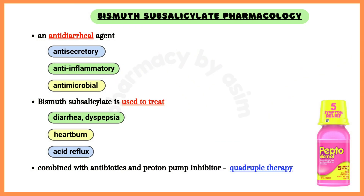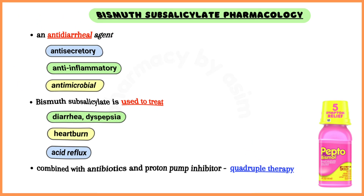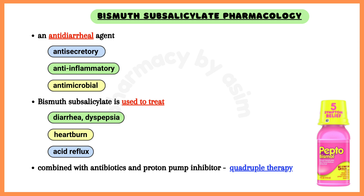Bismuth subsalicylate is an anti-diarrheal with anti-secretory, anti-inflammatory, and antimicrobial effects. It is used to treat diarrhea, dyspepsia, heartburn, and acid reflux.